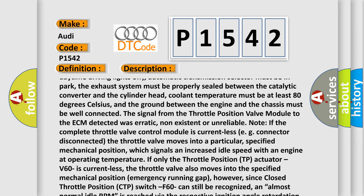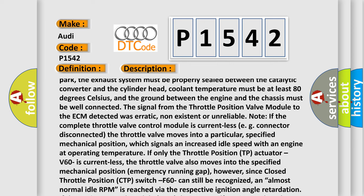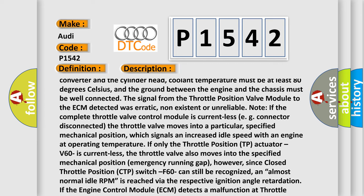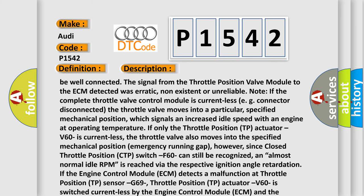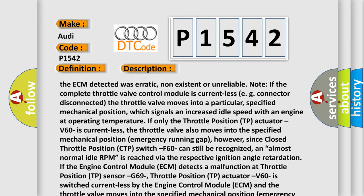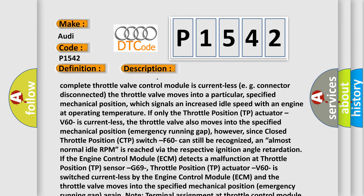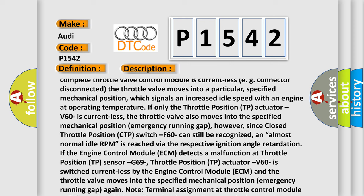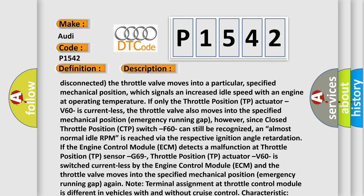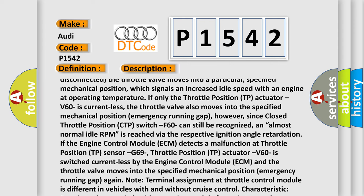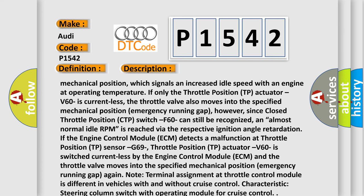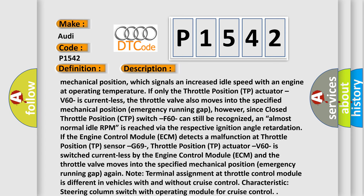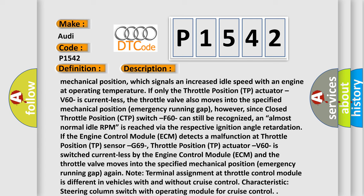The signal from the throttle position valve module to the ECM detected was erratic, non-existent, or unreliable. Note: if the complete throttle valve control module is currentless (e.g., connector disconnected), the throttle valve moves into a specified mechanical position, signaling an increased idle speed. If only the throttle position actuator V60 is currentless, the throttle valve also moves into the emergency running gap position. However, since the closed throttle position switch F60 can still be recognized, an almost normal idle RPM is reached via ignition angle retardation. If the ECM detects a malfunction at throttle position sensor G69, the throttle position actuator V60 is switched currentless by the ECM and the throttle valve moves into the emergency running gap again. Note: terminal assignment at the throttle control module differs in vehicles with and without cruise control.